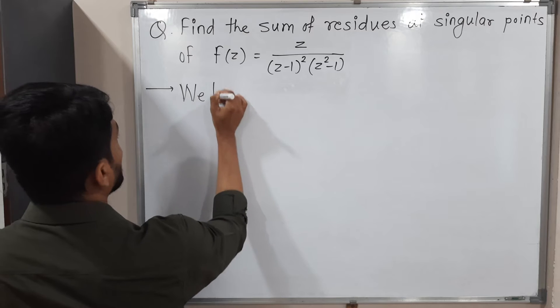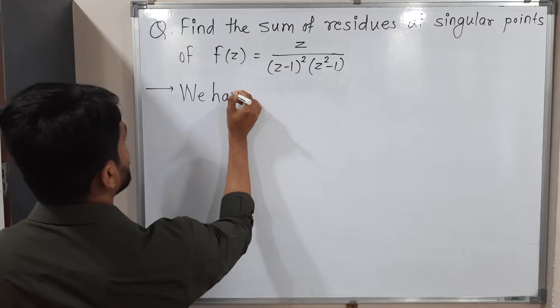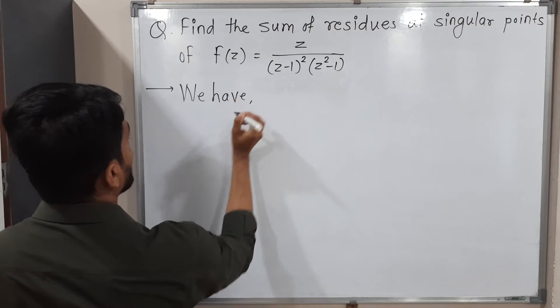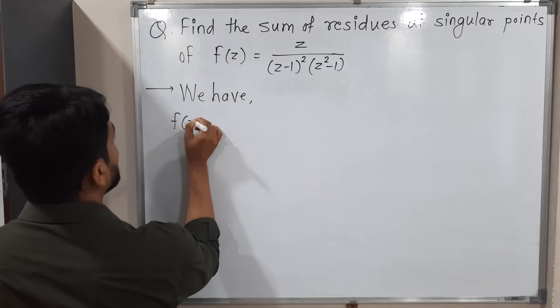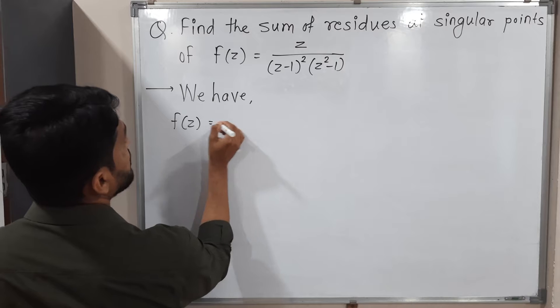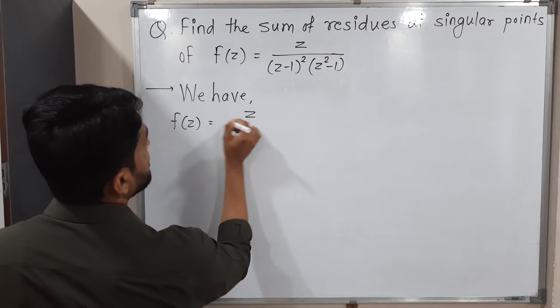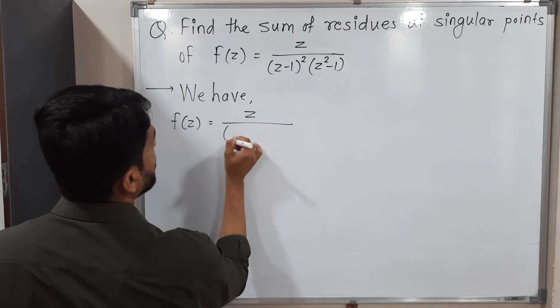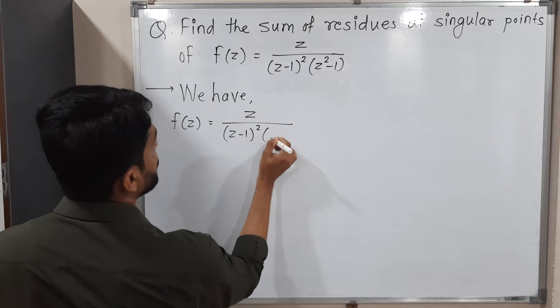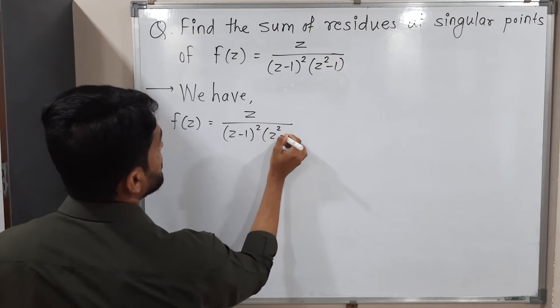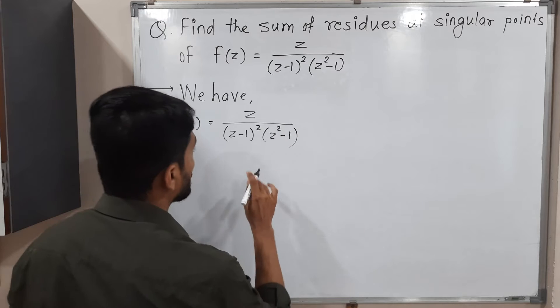The function we have is f(z) = z upon (z minus 1) squared times (z squared plus 1).